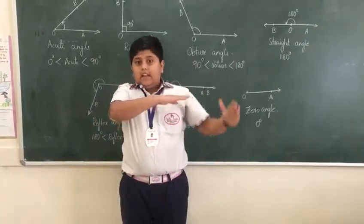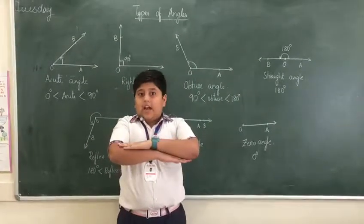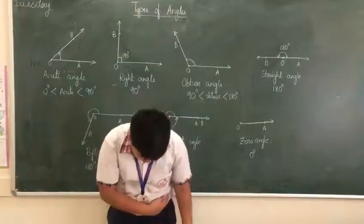This is the complete angle. It measures 360 degrees. And this is the zero angle which measures exactly 0 degrees. Thank you.